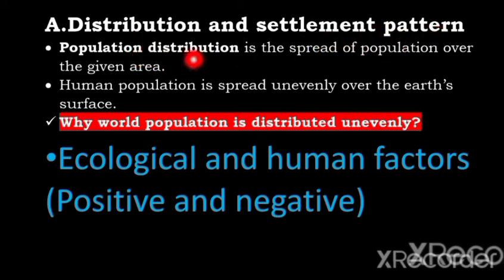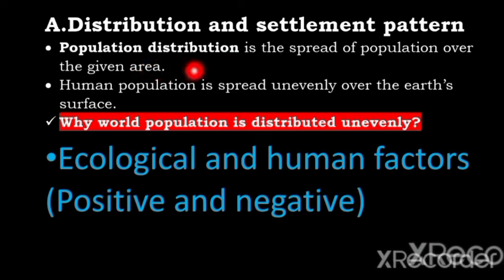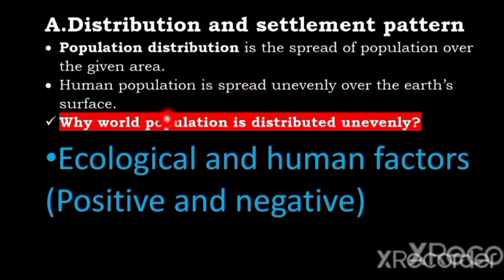Population distribution is the spread of population over a given area. Population distribution in Africa, in Asia, in Europe, in Oceania, in northern South America — the human population is spread unevenly or unequally over the earth's surface.